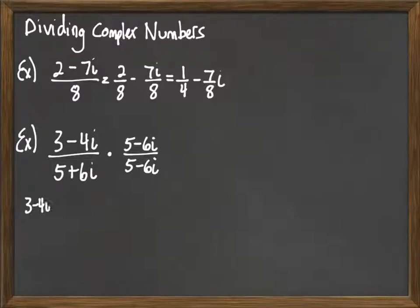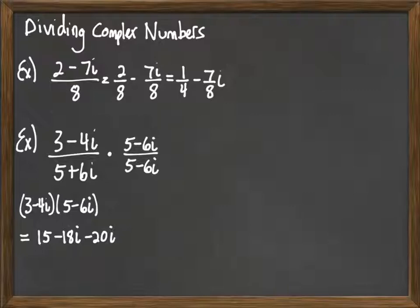3 minus 4i times 5 minus 6i. And we just FOIL that out. 3 times 5 is 15. 3 times negative 6i would be minus 18i. Negative 4i times 5 would be minus 20i. And then we finally multiply negative 4i and negative 6i to get 24i squared.